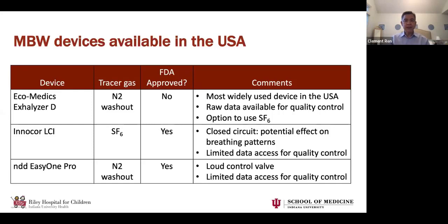Another device is the InaCore LCI device, which uses SF6. It's a closed-circuit device that uses a very small amount of SF6. There is some controversy about whether that affects breathing patterns, and there is limited data access for quality control — it's much more of a black box. You breathe in and get a number out, but you don't really know how it was derived or how well the test was performed. It's kind of like if spirometry only gave you FVC and FEV1 without the flow-volume loop. However, it is FDA approved.